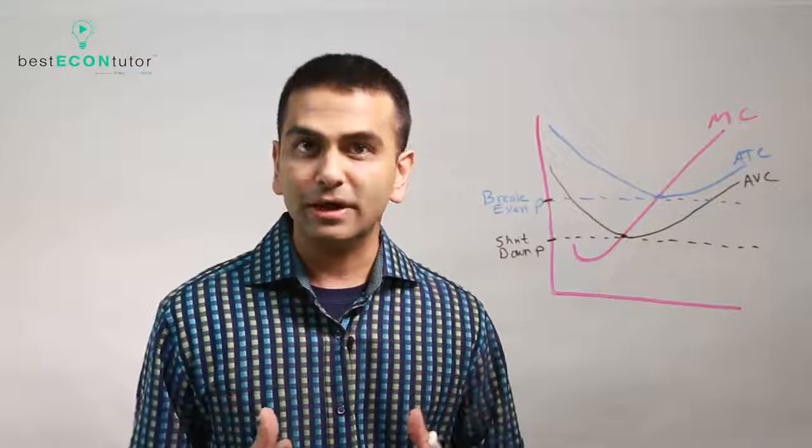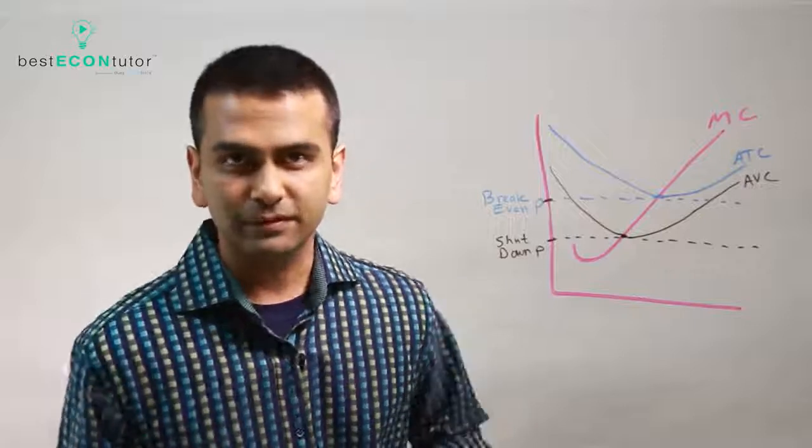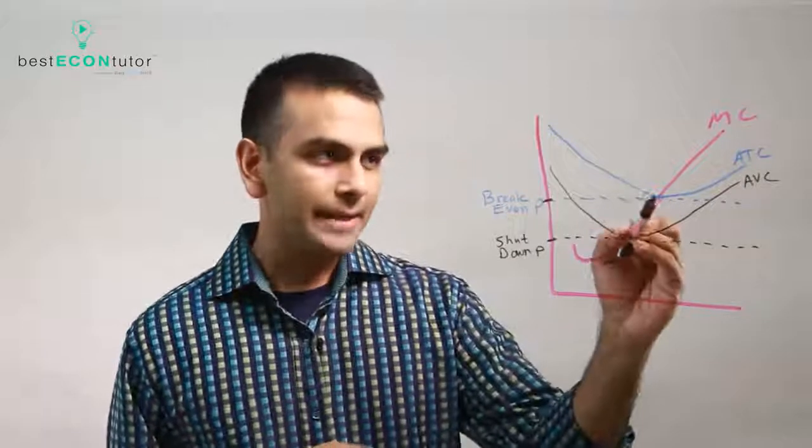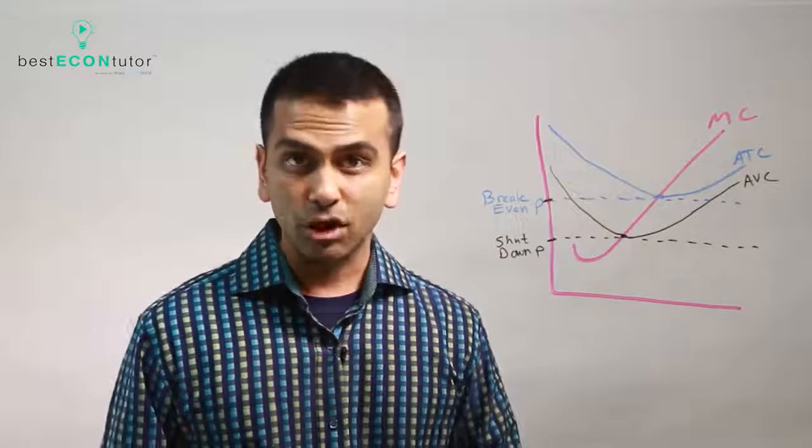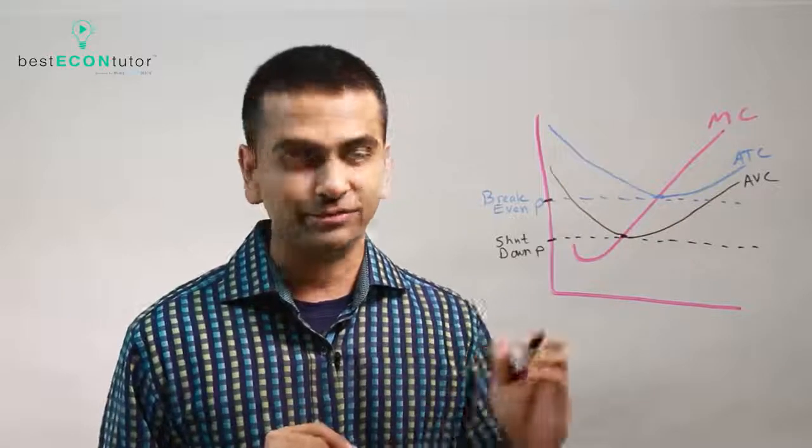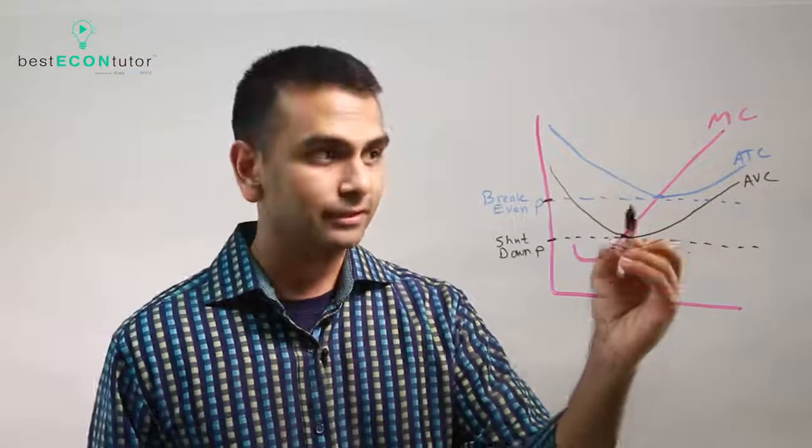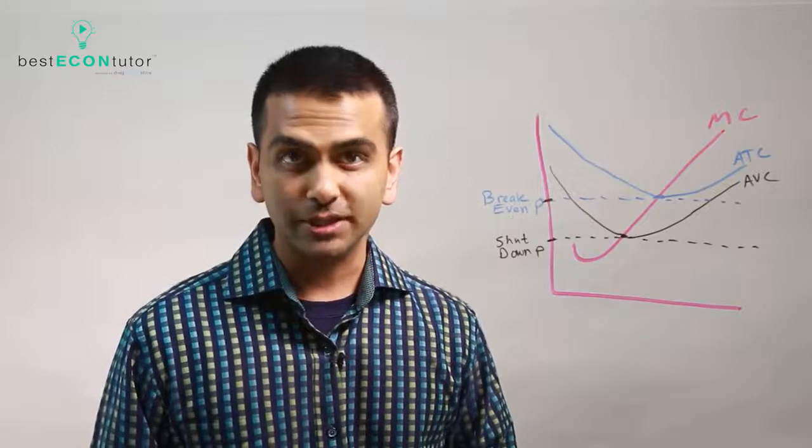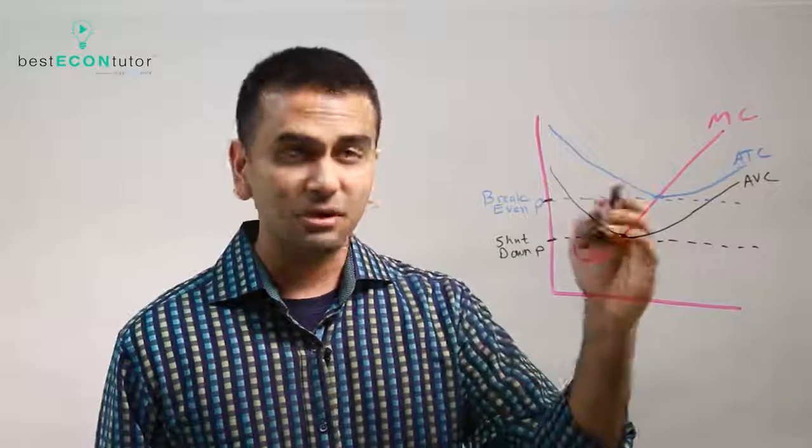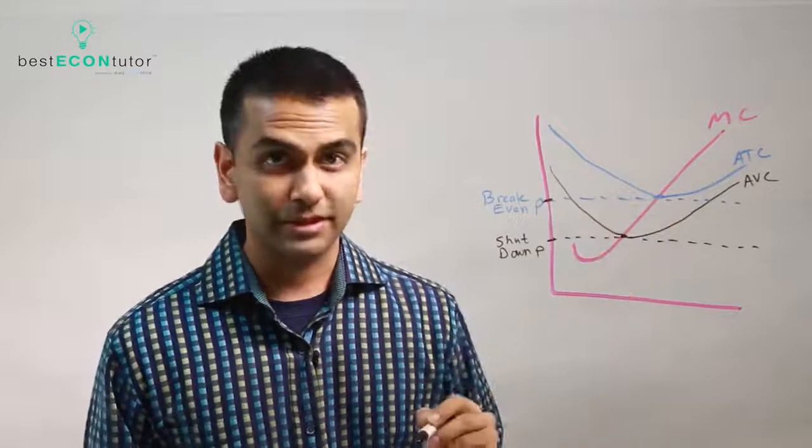Now let's talk about how do you know when a firm should shut down or not. A couple points of definitions here. The minimum point of the ATC curve is called the break-even price, and the minimum point, meaning the minimum Y value, of the AVC curve is called the shutdown price.